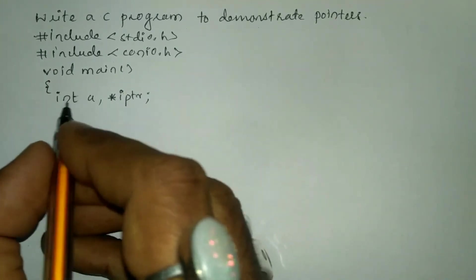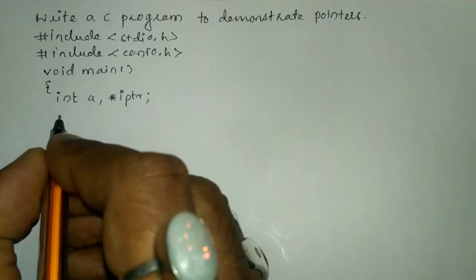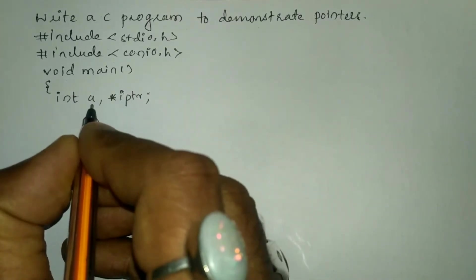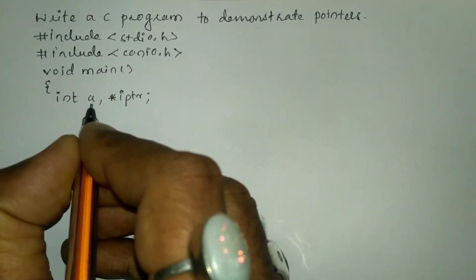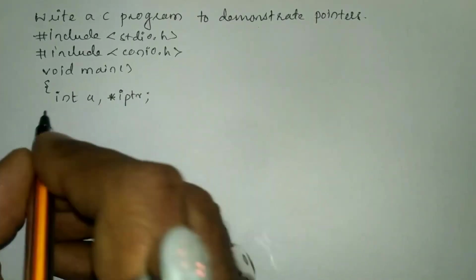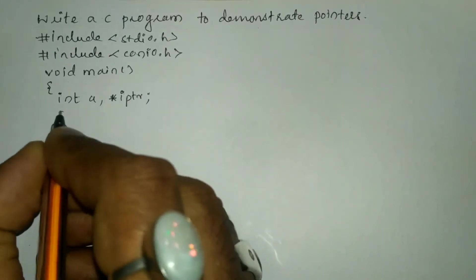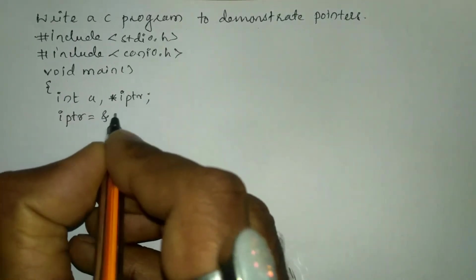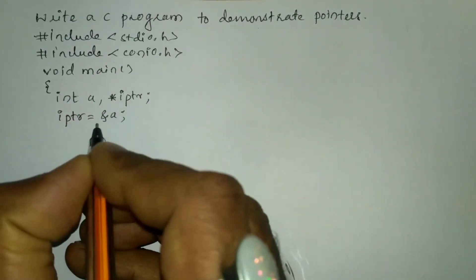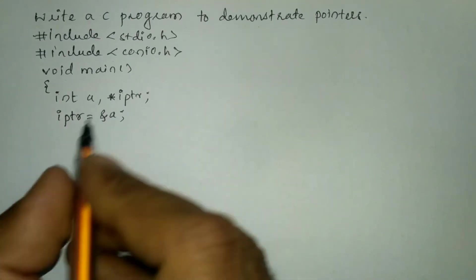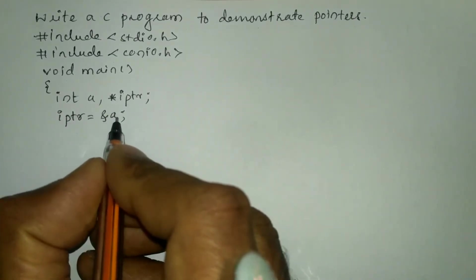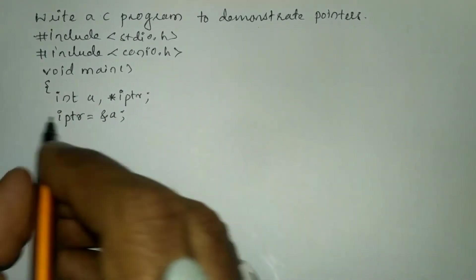Now let us initialize the pointer variable with the address of the common variable. Here I am going to write IPTR is equal to ampersand of a. So it is also read as address of a.